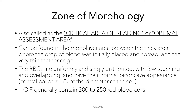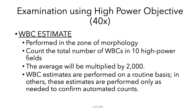Under the oil objective, this zone contains about 200 to 250 red blood cells. Under the high power objective, you can perform a WBC estimate — make sure to perform this in the zone of morphology. The WBC estimate involves counting the total number of WBCs in 10 high power fields, then multiplying the average by 2,000. WBC estimates are performed on a routine basis or only as needed to confirm automated counts, so it is very important to analyze our results even when using automated machines.